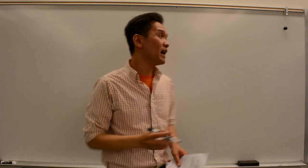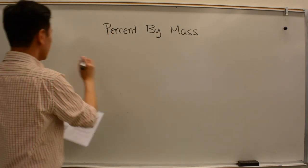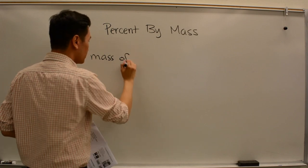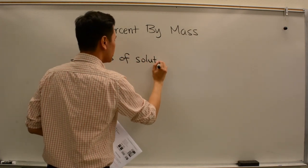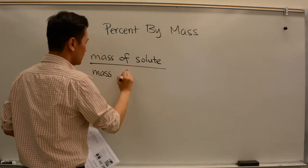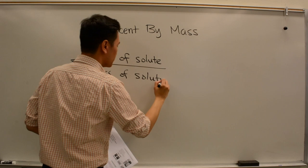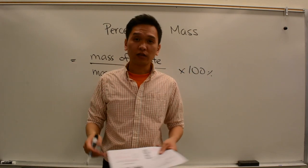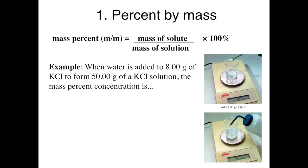The first concentration unit I want to talk about is percent by mass. The definition is that you have the mass of the solute divided by the mass of the solution, times 100%. Let's do an example. When water is added to 8 grams of KCl to form 50 grams of KCl solution, what is the mass percent?